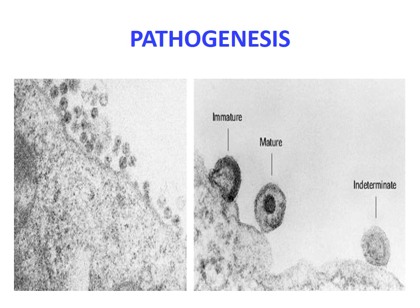Once viral particles enter the cytoplasm of the host cell, the reverse transcriptase enzyme is activated, resulting in formation of DNA from RNA. This DNA formation leads to new virions which bud out from the cell membrane of the host cell. The next picture shows the budding process — first there is an immature bud, which leads to a mature bud, forming new virion particles that enter into the circulation.